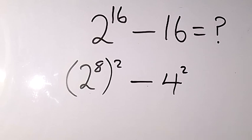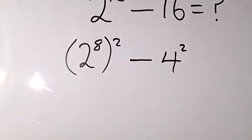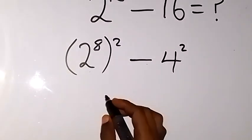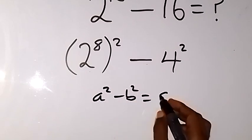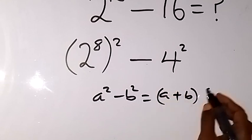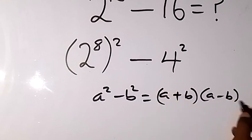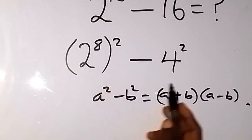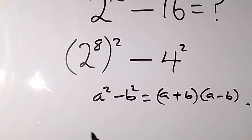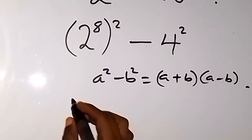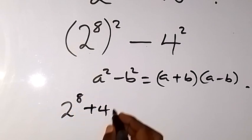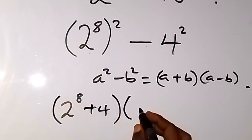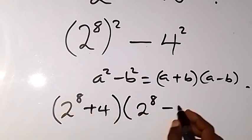This follows the difference of two squares: a squared minus b squared equals a plus b multiplied by a minus b. Treating 2 raised to power 8 as a and 4 as b, this becomes 2 raised to power 8 plus 4, into bracket 2 raised to power 8 minus 4.